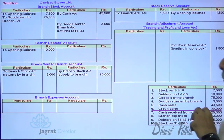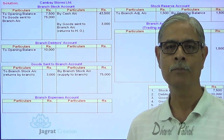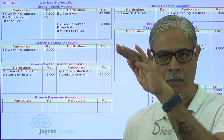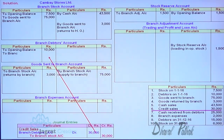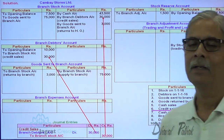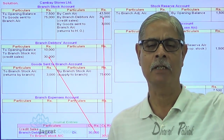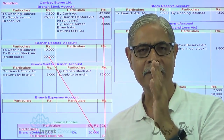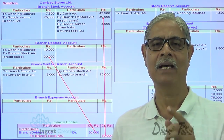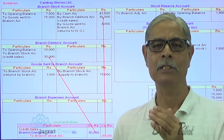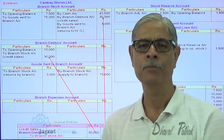For credit sales: branch debtors account is debited and branch stock account is credited, since stock at branch declines. The entry is: branch debtors account debit to branch stock account credit. Under the debtors system, credit sales between branch and customers were not recorded in the branch account because it was a transaction with the rest of the world. But in the stock and debtors system, all transactions of the branch are assumed by the head office and recorded. This is an important difference between the debtors system and the stock and debtors system.